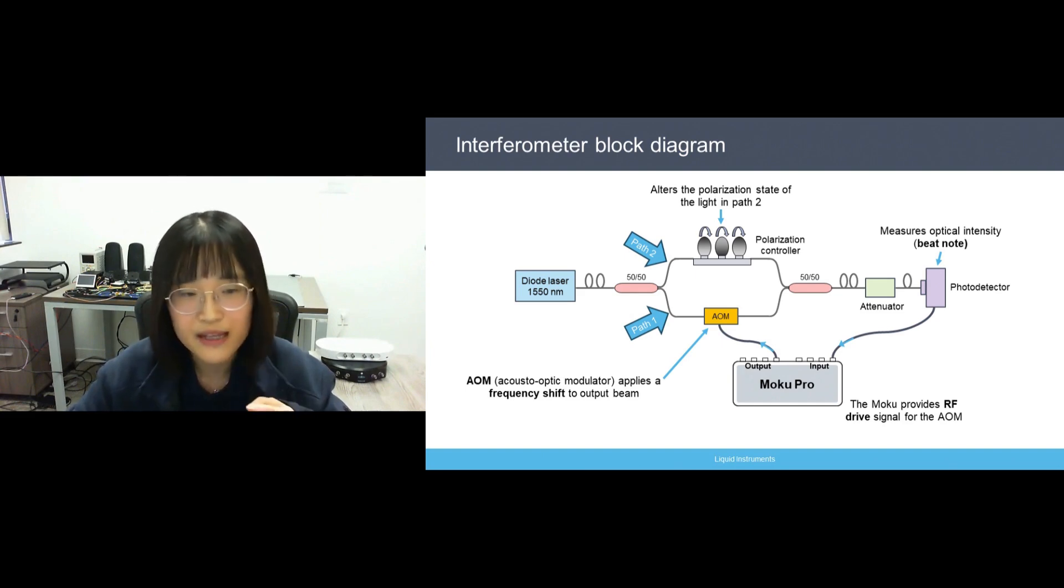Path 1 passes through an acoustic optic modulator, and the AOM applies a frequency shift to the diffracted output beam as a function of the AOM drive frequency. And Moku provides the RF drive signal to the AOM.